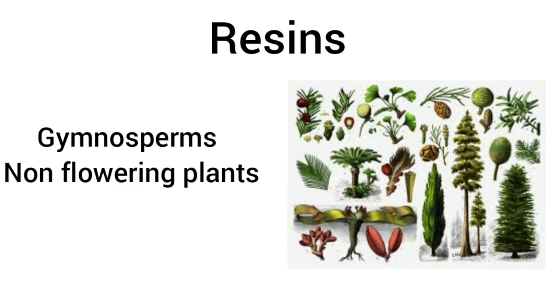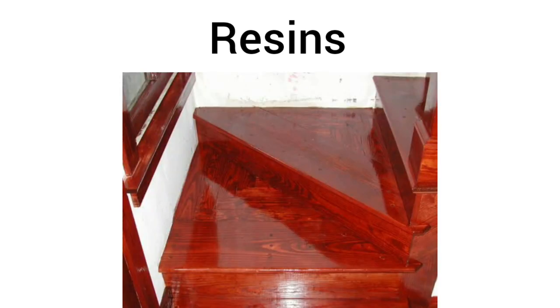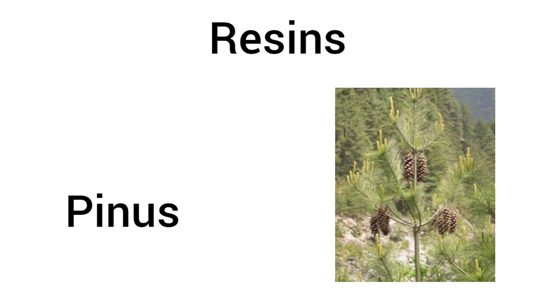Resins are mostly found in gymnosperms — the non-flowering plants of the plant kingdom. Gymnosperms are broadly distinguished from angiosperms, which are flowering plants. In gymnosperms, resins are given out through certain passages called resin passages. Resins are used in varnishes, which are used to polish wood and various surfaces and give a nice shine. An example of a plant which gives out resin is Pinus.